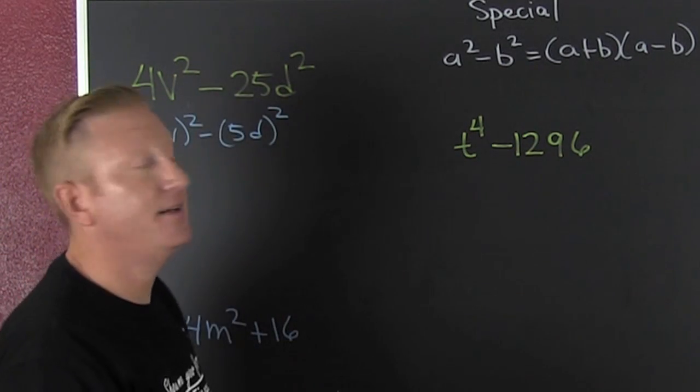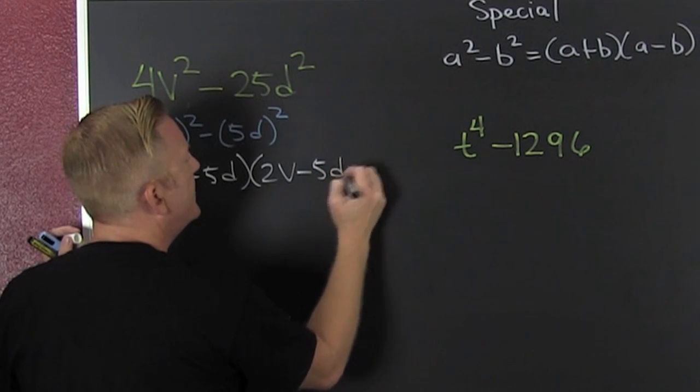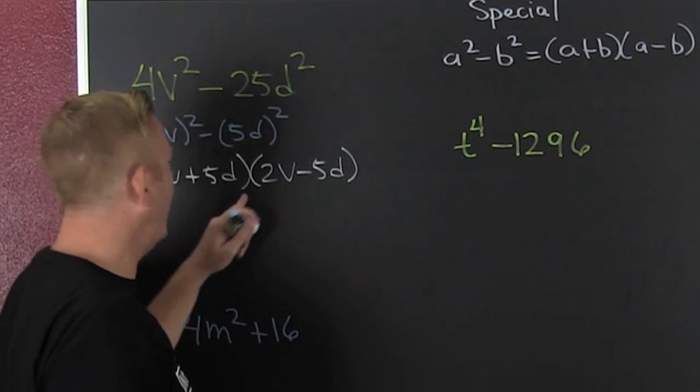If I have the difference of two squares, it factors into a plus b, a minus b. So then it's going to be 2v plus 5d and 2v minus 5d. And there you go.